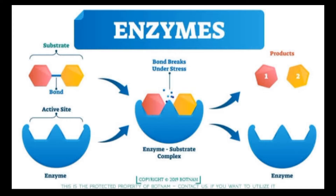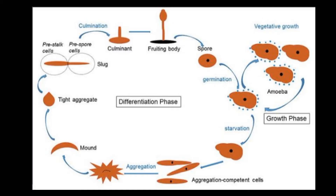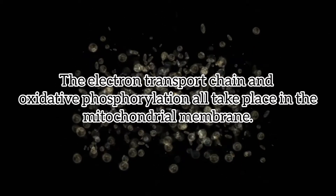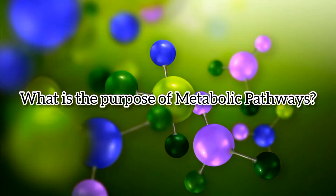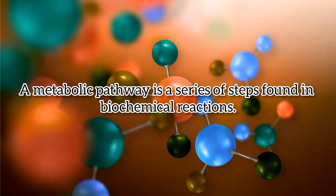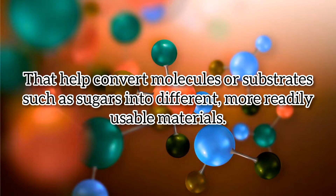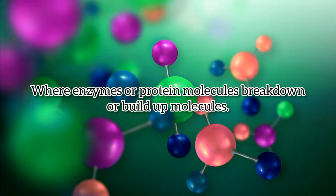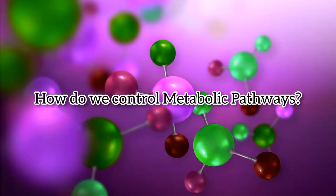The importance of enzymes: chemical reactions in metabolic pathways rarely take place spontaneously — each reaction step is facilitated or catalyzed by a protein called an enzyme. Enzymes are important for catalyzing all types of biological reactions, both those that require energy and those that release energy. Different metabolic pathways function based on their position within a eukaryotic cell; for instance, the electron transfer chain and oxidative phosphorylation take place in the mitochondrial membrane. The purpose of a metabolic pathway is to convert molecules or substrates such as sugar into different, more readily usable materials through reactions inside the cell where enzymes build or break down molecules.